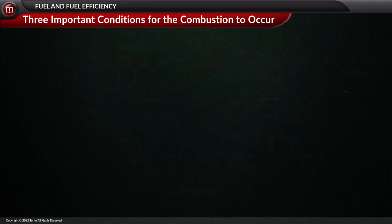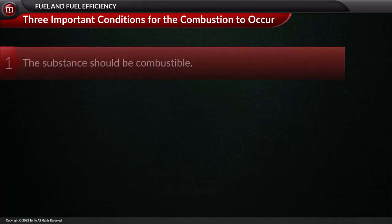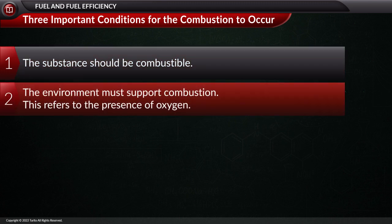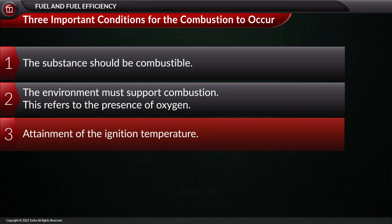Let us learn the three important conditions for combustion to occur. The first is that the substance should be combustible. The second condition is that the environment must support combustion — this refers to the presence of oxygen. The third condition for combustion is the attainment of the ignition temperature.